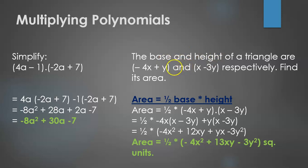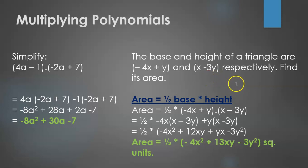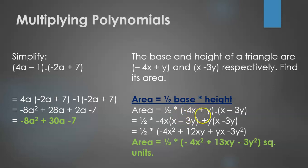Here's another example. We're given the base and height of a triangle as expressions minus 4x plus y and x minus 3y. Applying the triangle area formula — half times base times height — we multiply each term of the first expression with the second expression and simplify to get the area in square units.